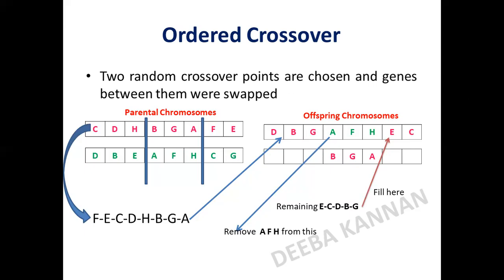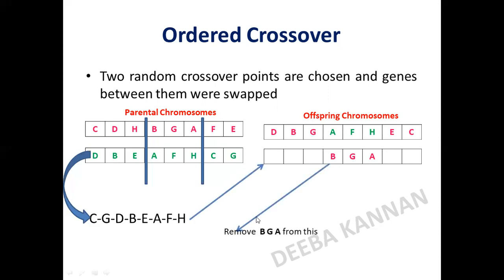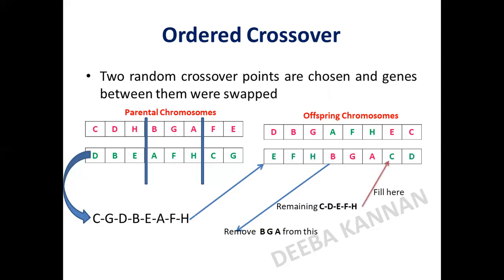This is called ordered crossover. A very specific thing about ordered crossover is that it is used to preserve the order — the way in which the elements are arranged. Similarly, for the second offspring, B, G, A from parent one is copied, and I have to fill the remaining positions using parent two. Excluding B, G, A which are already present, I remove those from the list.